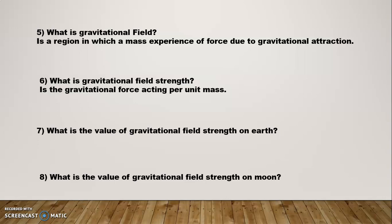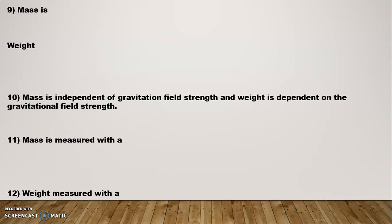Question Number 7: What is the value of gravitational field strength on Earth? That is 10 Newton per kg. The symbol for gravitational field strength is g. Question Number 9: Mass is a scalar quantity and weight is a vector quantity. Question Number 10: Mass is independent of gravitational field strength, and weight is dependent on gravitational field strength.